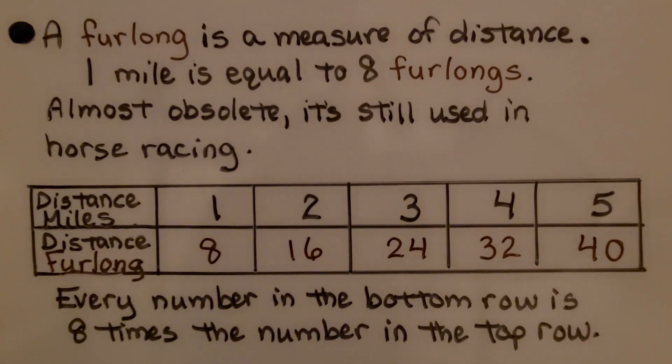Have you ever heard of a furlong? A furlong is a measure of distance. 1 mile is equal to 8 furlongs. It's almost obsolete. It's still used in horse racing.